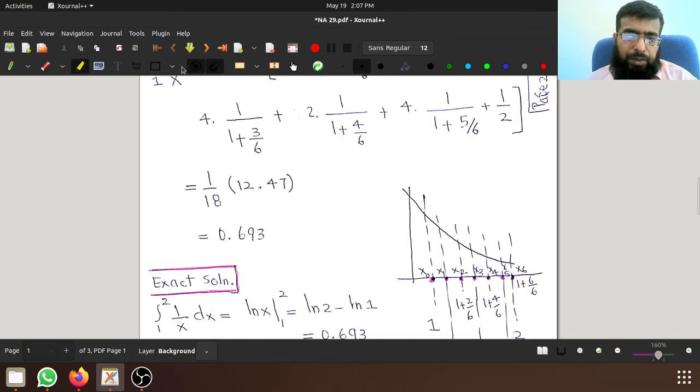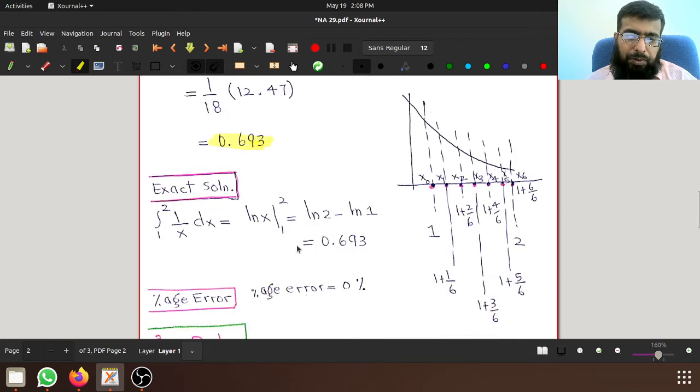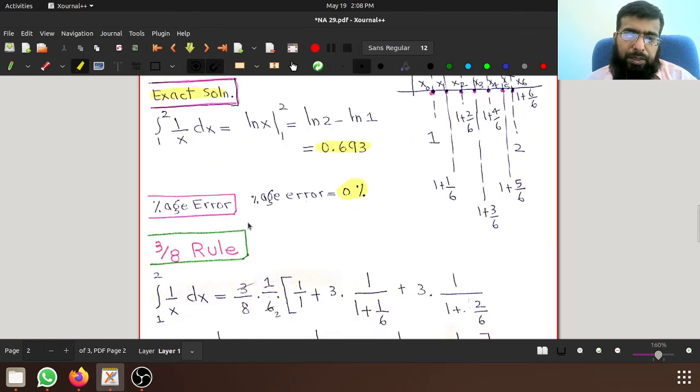And we reach a very interesting answer that is 0.693. A very interesting answer because if you want to find out the exact solution, that also comes out to be 0.693. And that's great, we have got zero percent percentage error. So Simpson's one-third rule has once again proved itself to be 100% correct.